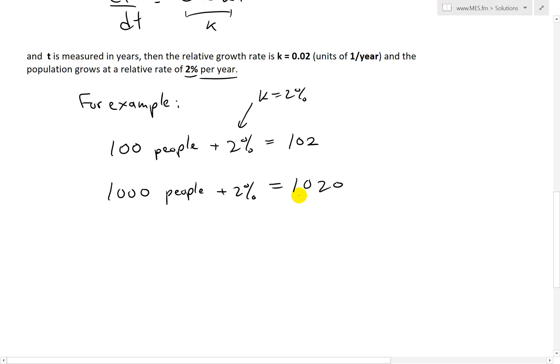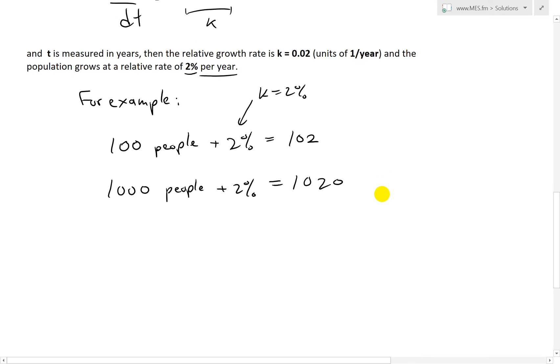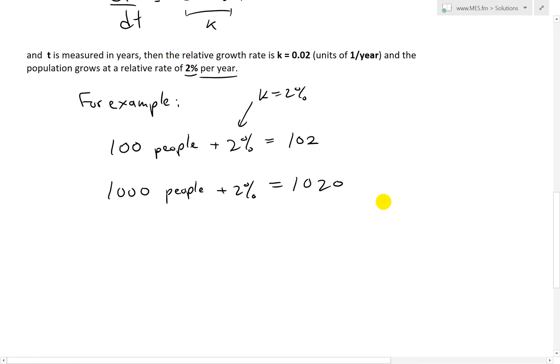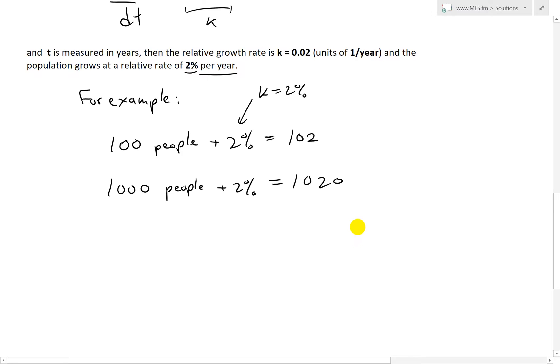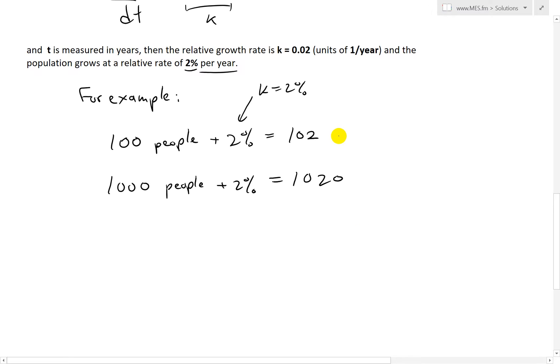So that's the whole idea. It's a relative growth rate as opposed to an absolute. Even though this grew by 2, the absolute is much smaller than this one which grew by 20, even though they have the exact same relative, because it depends on the size of the population.